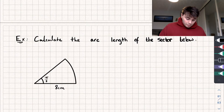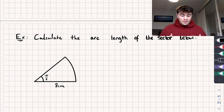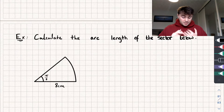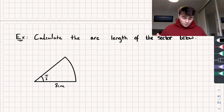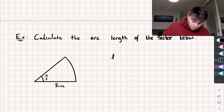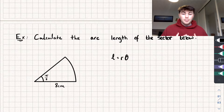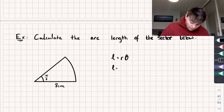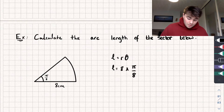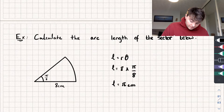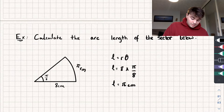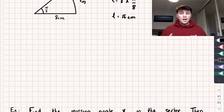Let's answer some questions. The first one says: calculate the arc length of the sector, which has a radius of 8 centimetres and an angle of pi over 8 radians. Using L equals r times theta, we get L equals 8 multiplied by pi over 8, so the arc length is exactly pi centimetres.